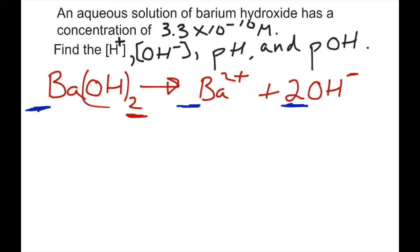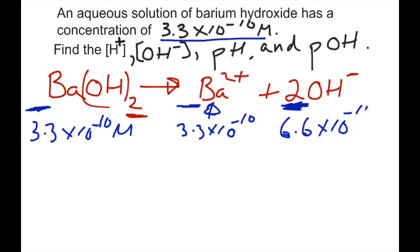Now, if our barium hydroxide is this concentration, 3.3 times 10 to the negative 10 big M, what would the barium concentration be? It will be also 3.3 times 10 to the negative 10. We're just putting that there for formality because we're really not interested in barium. But we're interested in hydroxide. Now, since it's a 1 to 1 to 2 ratio, our OH concentration would be 6.6 times 10 to the negative 10. And that's one of our answers. We just found our OH minus concentration. It's 6.6 times 10 to the negative 10.